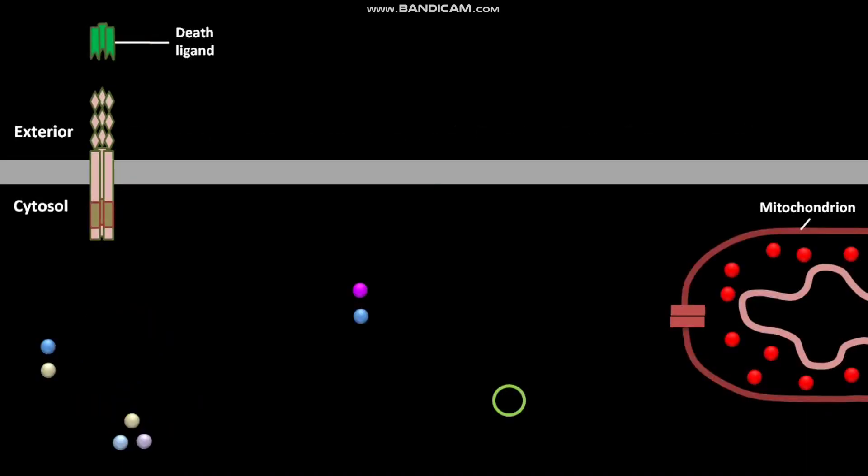During extrinsic pathway of apoptosis, Fas death receptor present in the plasma membrane of a target cell binds to the death ligand like FasL or CD95L.